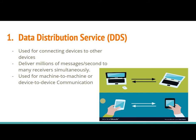The first protocol is Data Distribution Service, DDS. This is a device-to-device protocol. It delivers millions of messages per second to many receivers simultaneously. So in device-to-device communication, one device sends messages to another device. This is how the Data Distribution Service protocol works. We call it machine-to-machine and device-to-device communication.